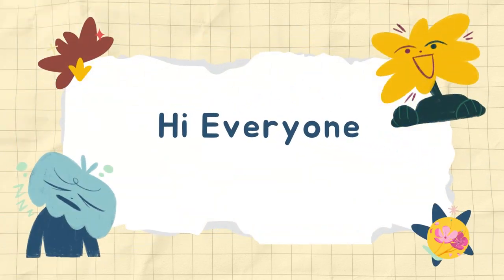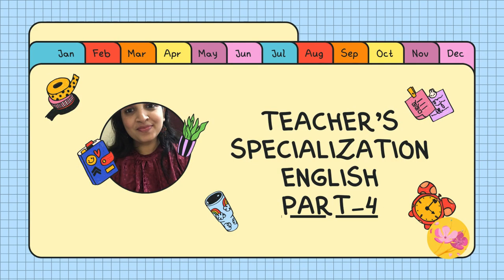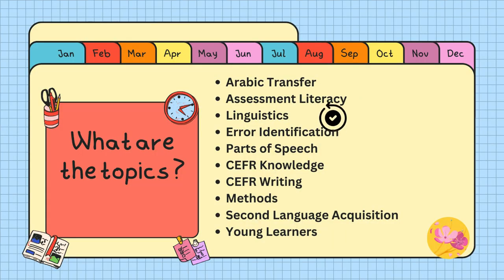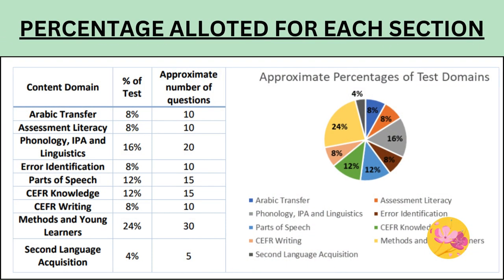Hello everyone, welcome back to my channel. Today we will be going to Part 4 for teacher specialization English examination, and that is the third topic: linguistics. For linguistics, we have phonology, IPA, and linguistics together — we have 16 percentage of the test and 20 questions under this category.